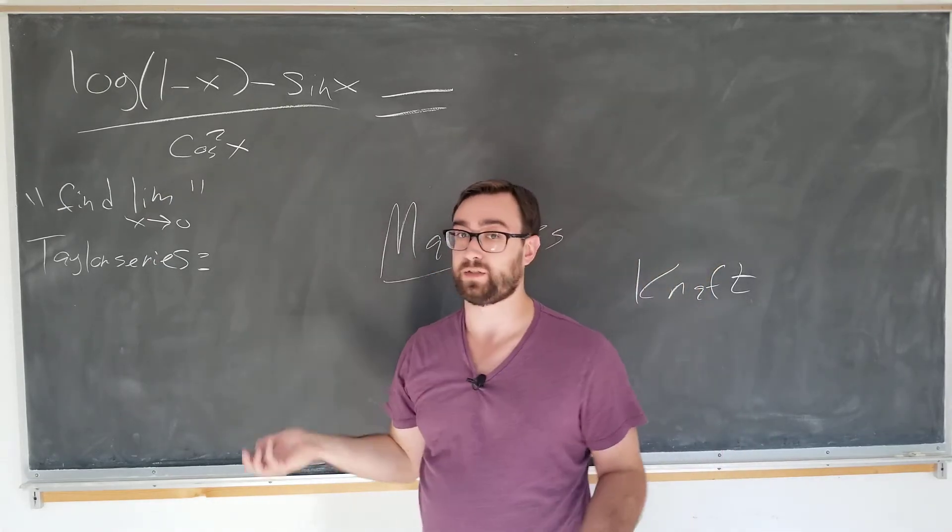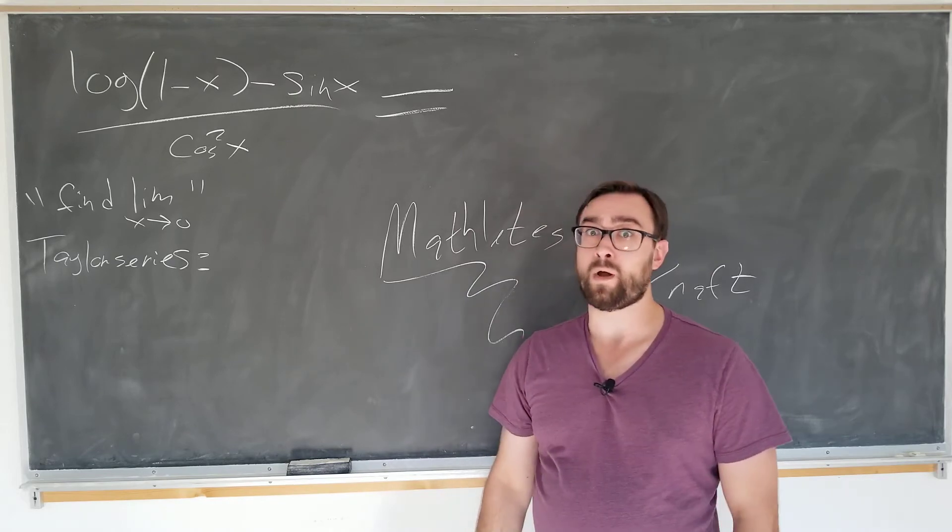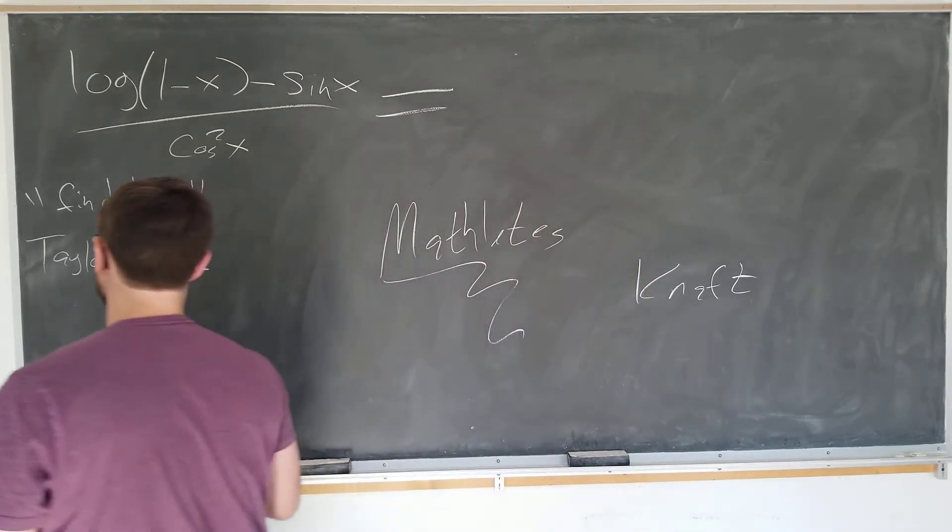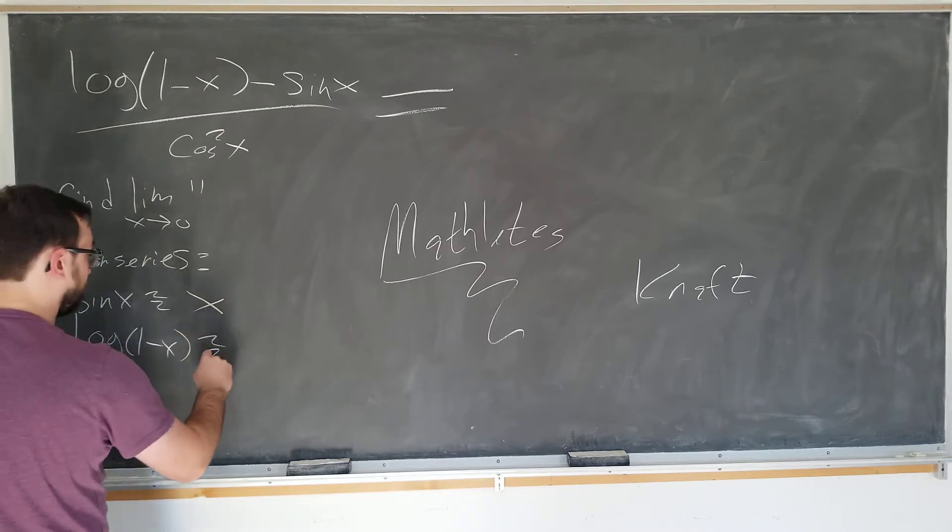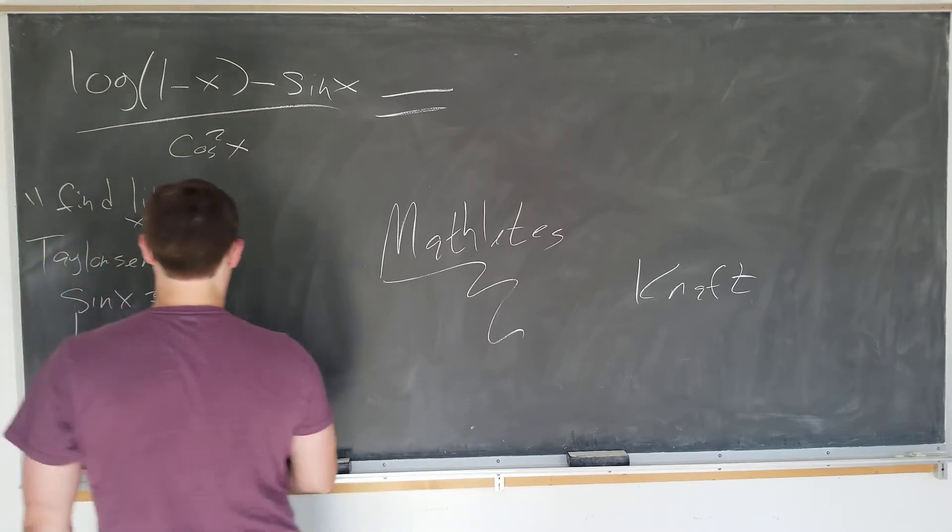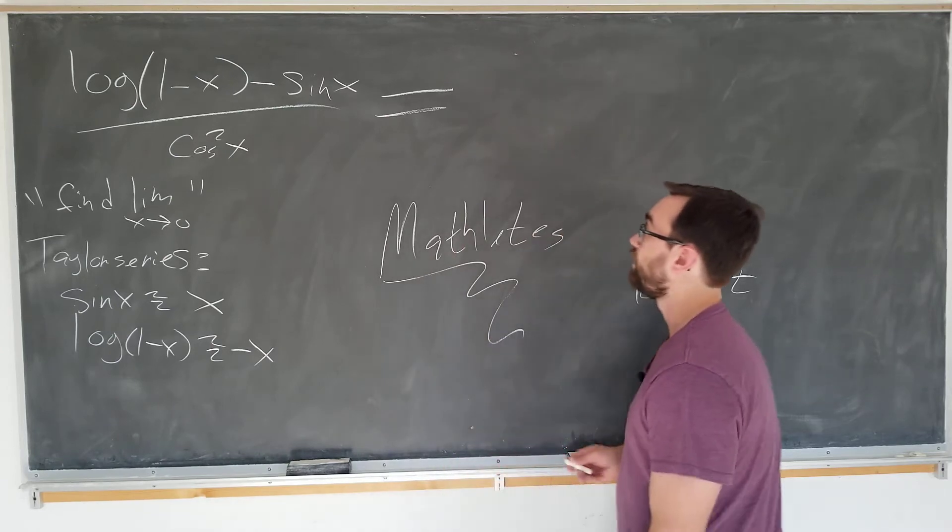So everybody knows that we have sine X being approximately X, and we have log of 1 minus X being approximately minus X. These are not too hard to derive, and we're going to use a trig identity to write this in terms of sine so we don't have to do the cosine series.